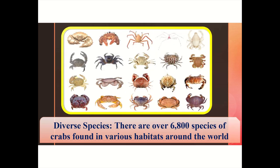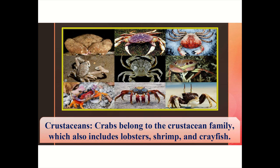Diverse species: there are over 6,800 species of crabs found in various habitats around the world. Crustaceans: crabs belong to the crustacean family, which also includes lobsters, shrimp, and crayfish.